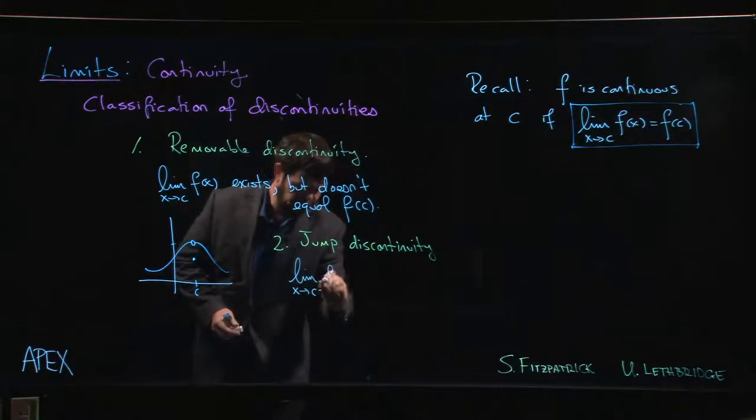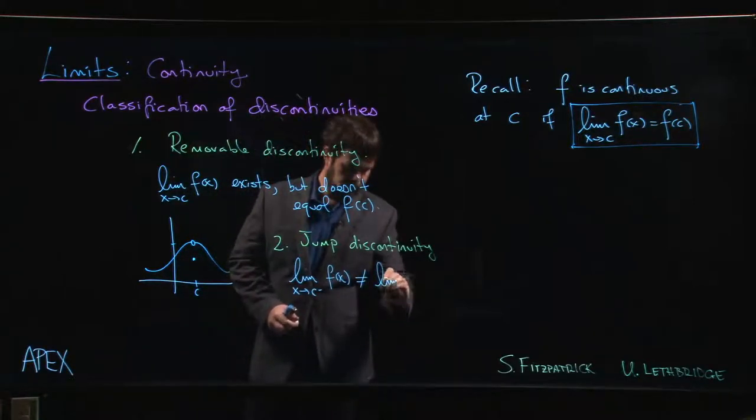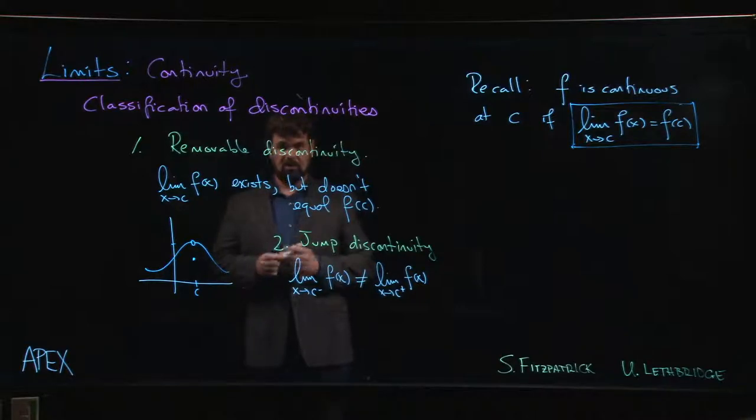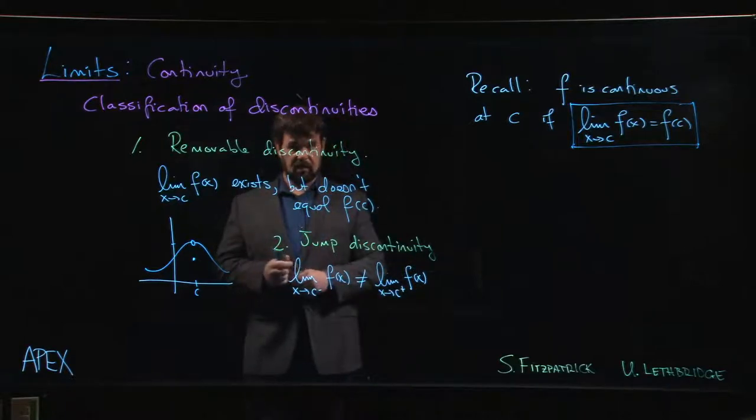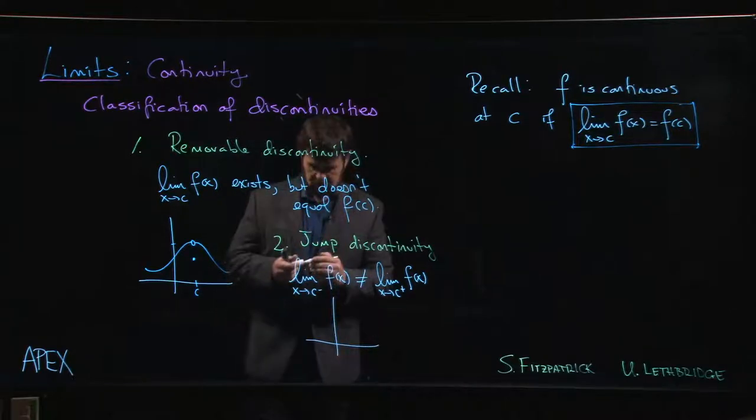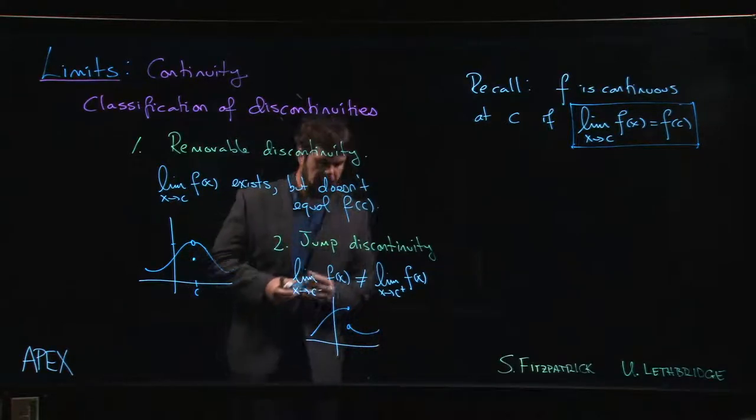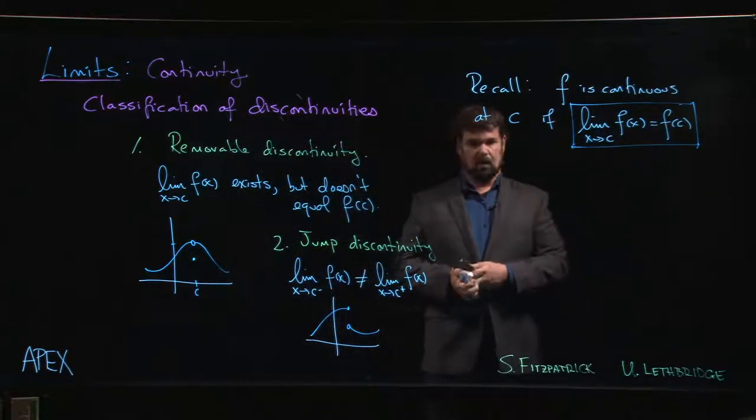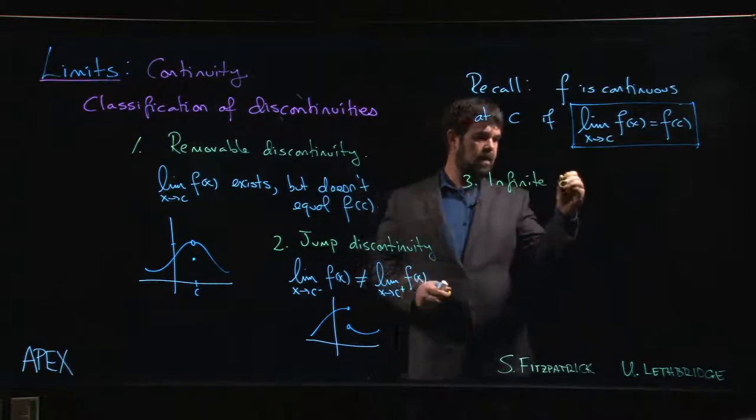We've seen examples of this with things like step functions or piecewise defined functions where the left-hand limit has one value, the right-hand limit has another value, they don't agree, and so the function is discontinuous. With a jump discontinuity you expect to see a graph that looks something like this, where there's a jump in the y value from one side to the other. The name makes sense.